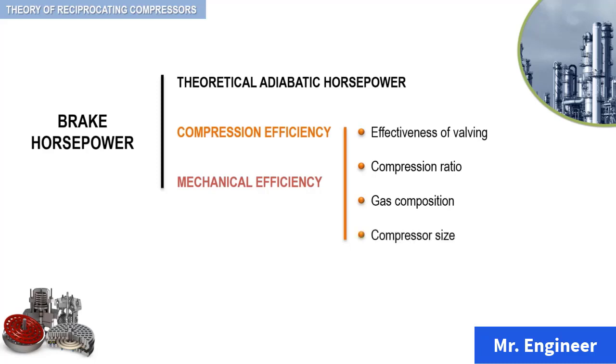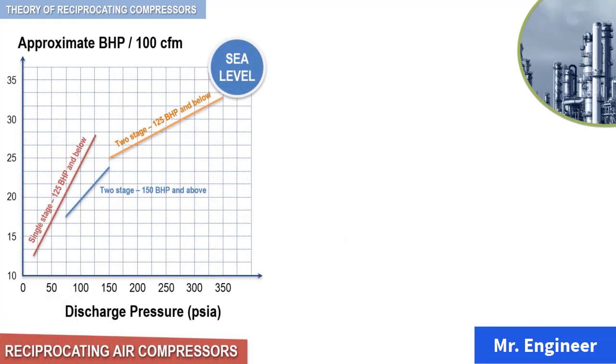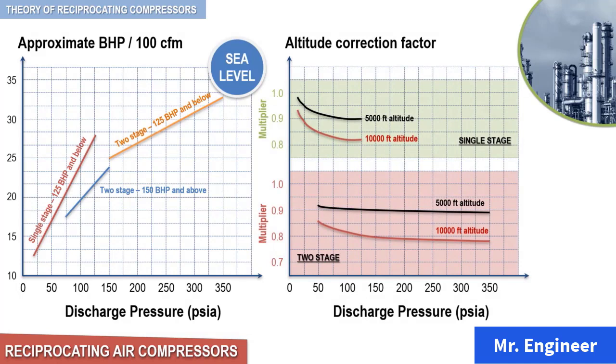For preliminary estimation of sea-level air compressors for general power services, the data shown in the following figure are reasonable but subject to confirmation by your manufacturer. Information here is based on 100 actual cubic feet per minute of delivered intake air. For altitude installation, the performance will differ as we have discussed in a previous video. The next figure gives approximate altitude correction factors for the brake horsepower.